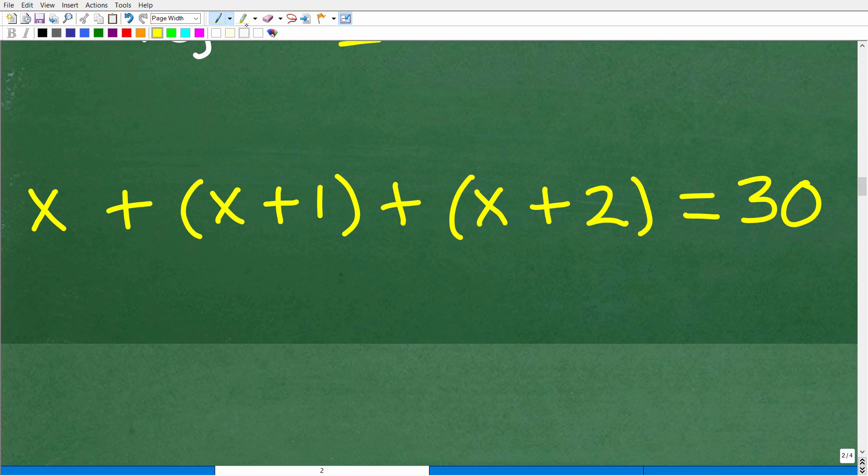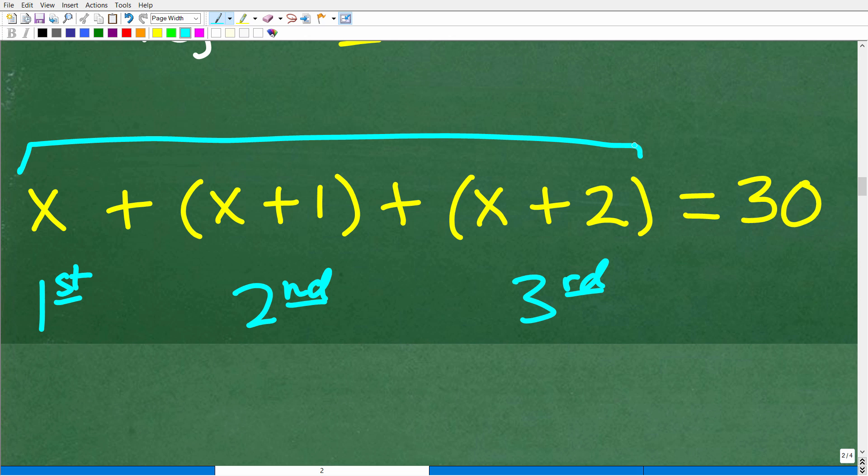So here's our equation right here. Here is our first integer. This is our first integer. Remember X, our second integer right here is X plus 1, and our third integer is X plus 2, or X plus 1 plus 1. And the sum of these three consecutive integers is 30. All right, so at this point in time, we're just talking about basic algebra. So we want to solve this equation for X. So let's go ahead and get into that right now.